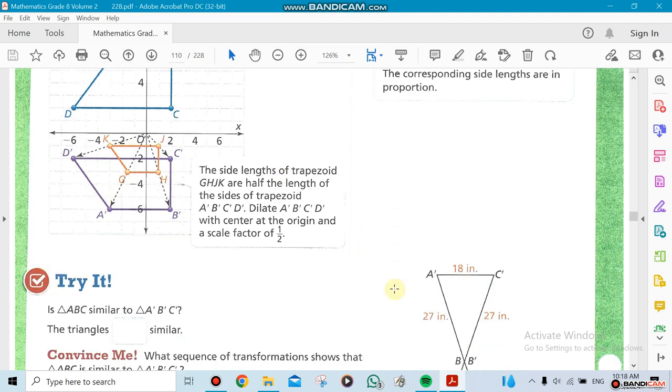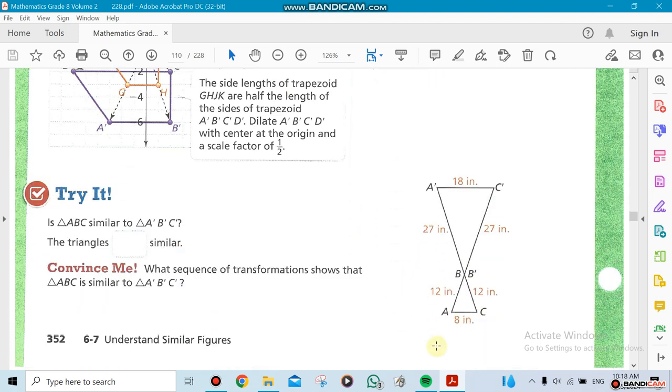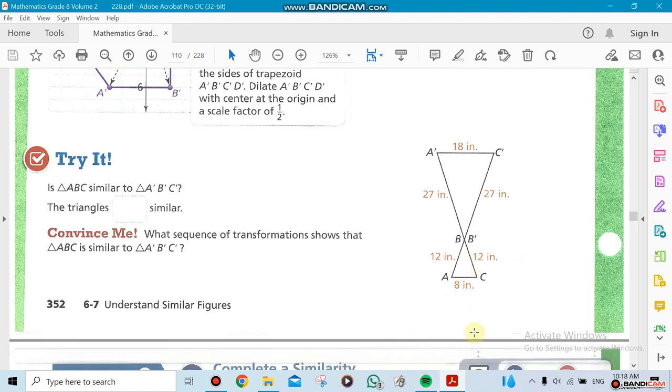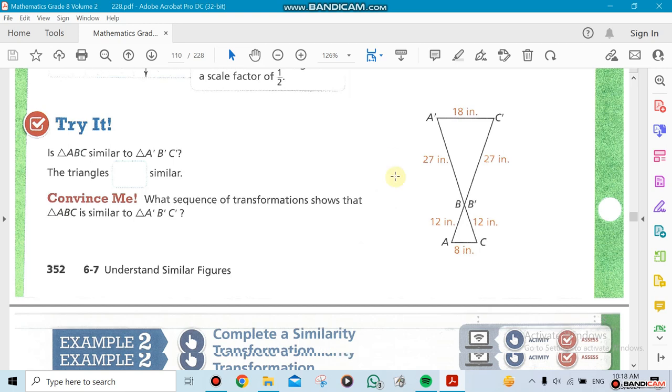Look at this shape here. You can see that if I look at, for example, this one here, it's 27, 27, 12, 12, 18, 8. So we need to do the proportions here, and if they come up with the same factor as the proportional factor, that means they are similar to each other.